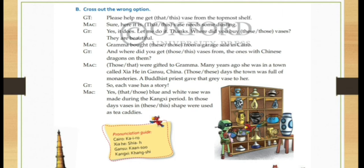Next one. Dash were gifted to grandma. So here what will come? Those. Those were gifted to grandma. Many years ago she was in a town called Zia in Gansu, China. Those days. Those days the town was full of monasteries. Here what will come? Those days. The days which are far. That are those.